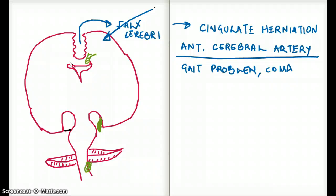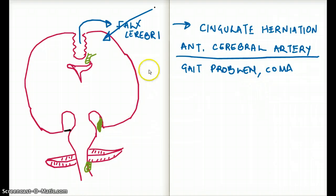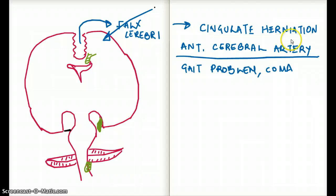The patient can also go into coma. The two main effects associated with anterior cerebral artery involvement are gait problem and coma. That is our sub-falcine herniation, or cingulate herniation.